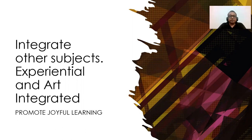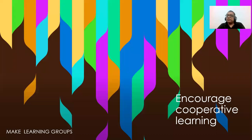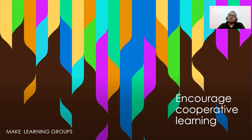Cooperative learning — you must have been doing this. There is one child who does exceptionally well, another not so good in maths. Make learning groups: group roll numbers one to five, one group with a team leader, and create a learning experience. If there is somebody weak, they will automatically be taken care of by the other group members.